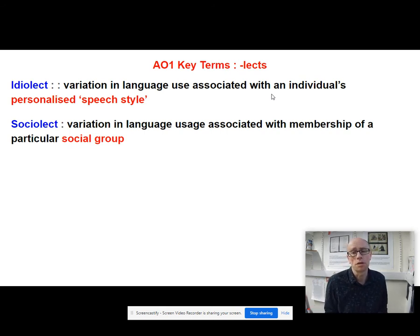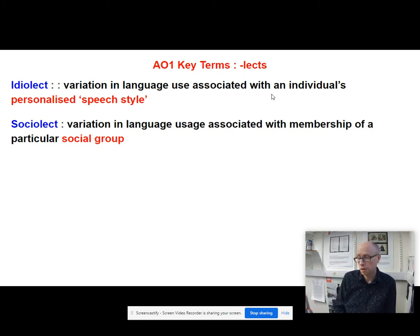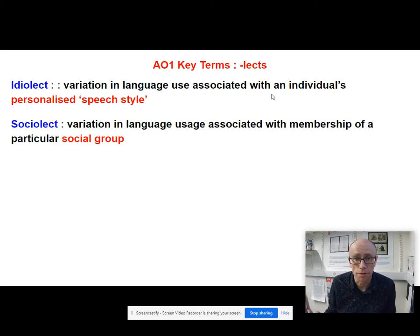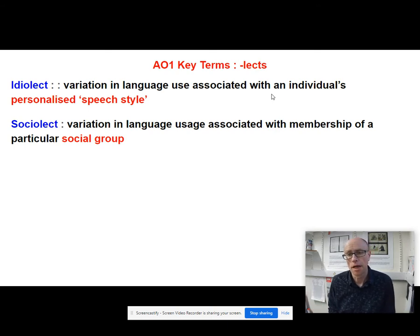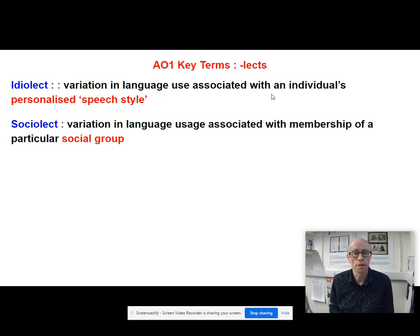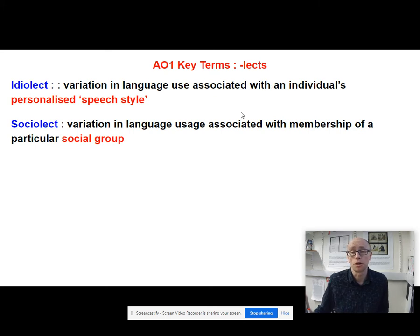Sociolect is the language used that shows you are a member of a particular social group. These can be small scale or large scale. A sociolect could be to do with the accents you use because you live in the northeast of England, or it may be to do with a small-scale group like a Facebook or WhatsApp group where you use language quite unique to that particular group.